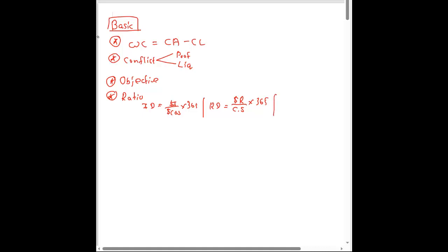Another ratio is payable days. Payable days equals payables divided by credit purchases, multiplied by 365. If credit purchases are not given, you can use purchases instead. If purchases are also not given, you can use cost of sales.